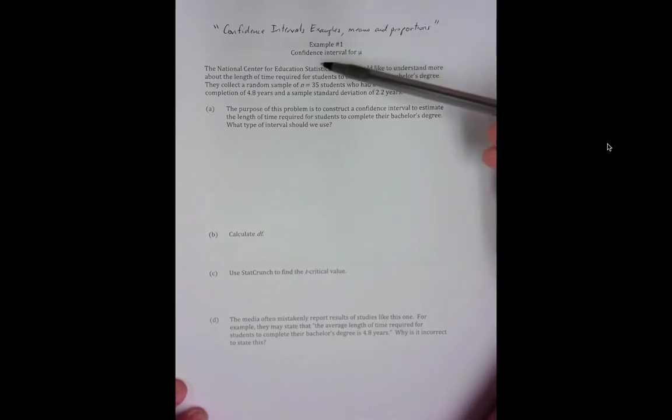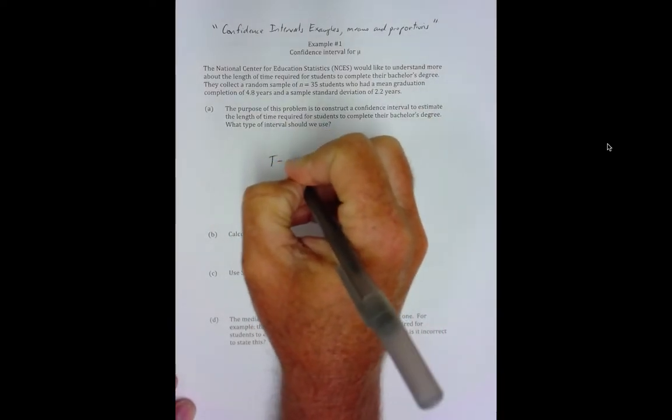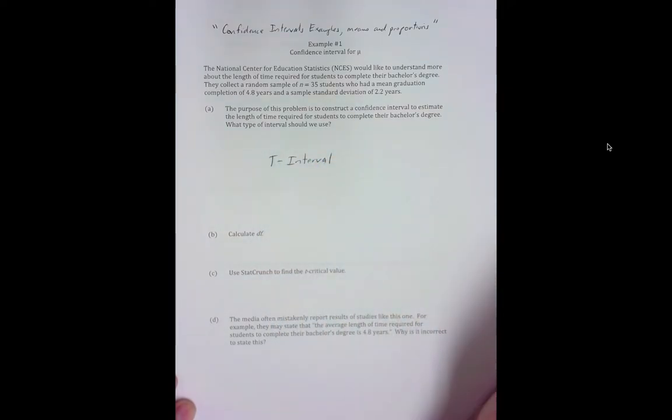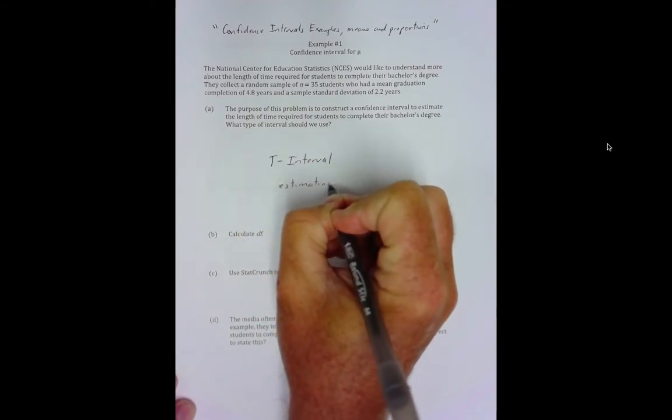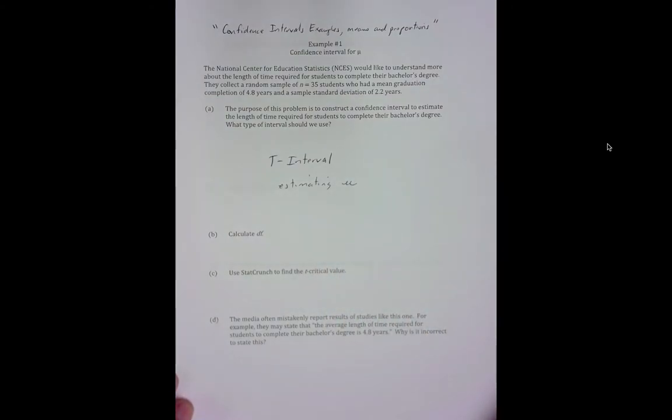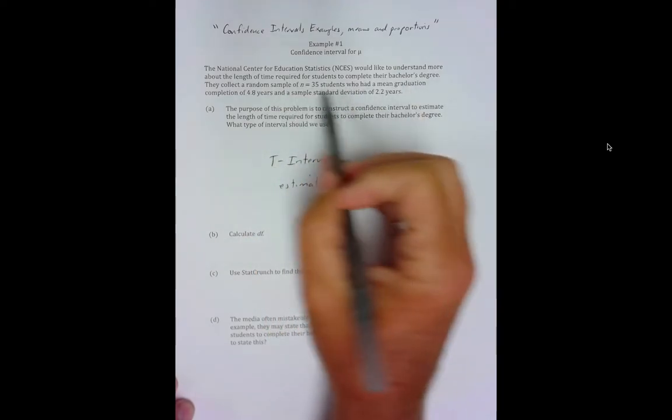First example: The National Center for Education and Statistics would like to understand more about the length of time required for students to complete their bachelor's degree. They collect a random sample of 35 students. Those 35 students had a mean graduation completion of 4.8 years and a sample standard deviation of 2.2. The purpose of this problem is to construct a confidence interval to estimate the length of time required for all students to complete their bachelor's degree.